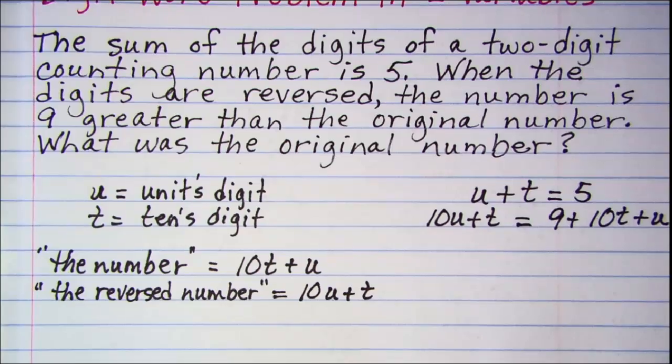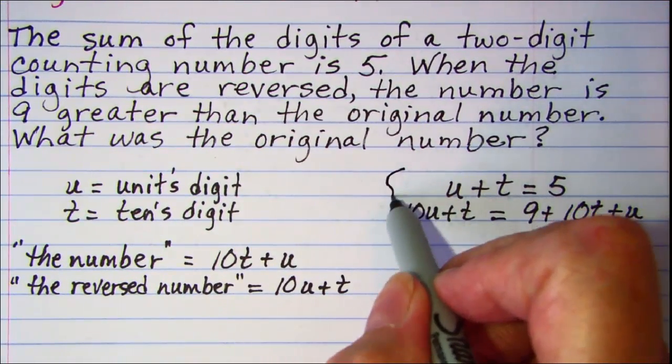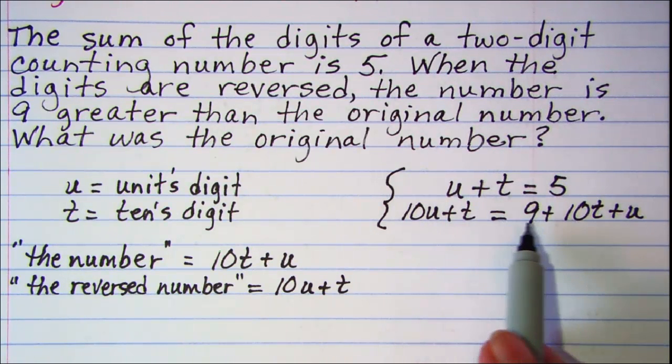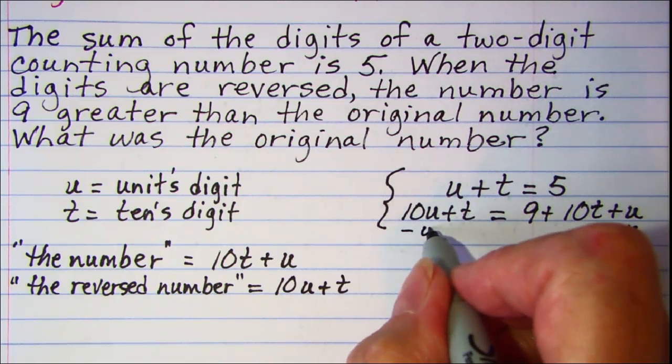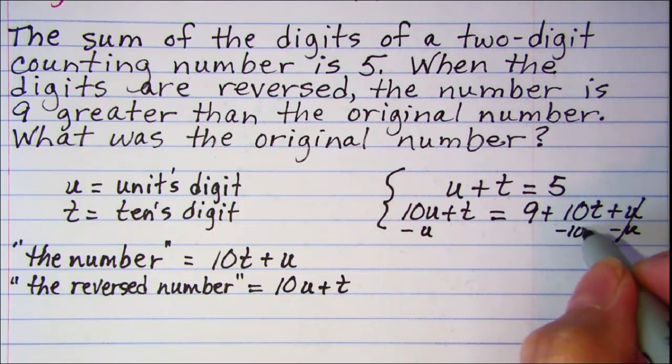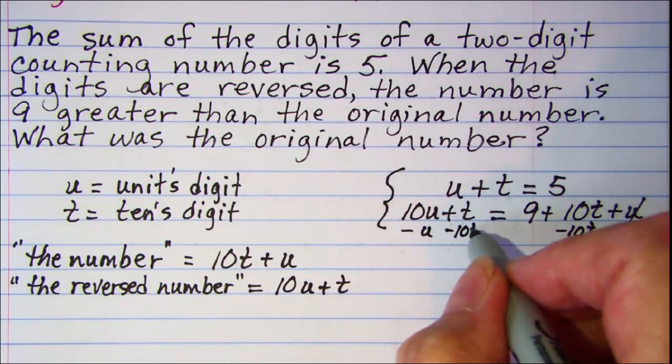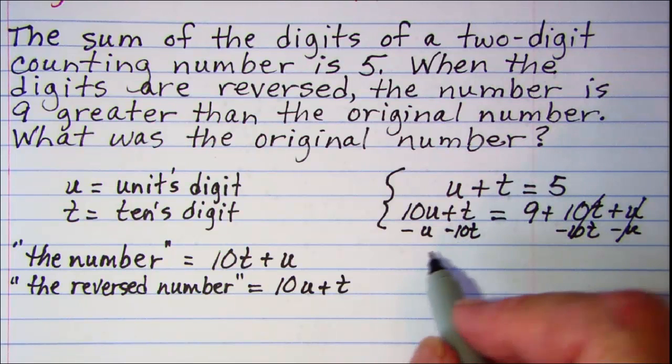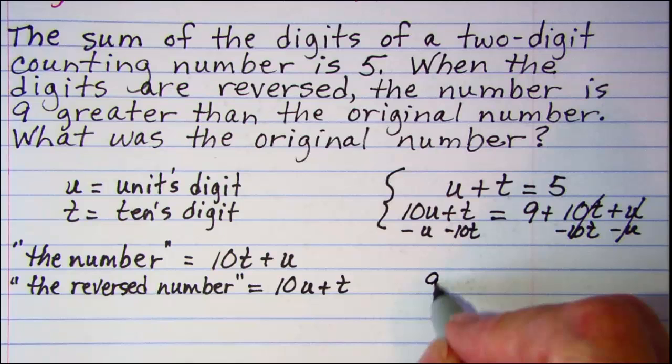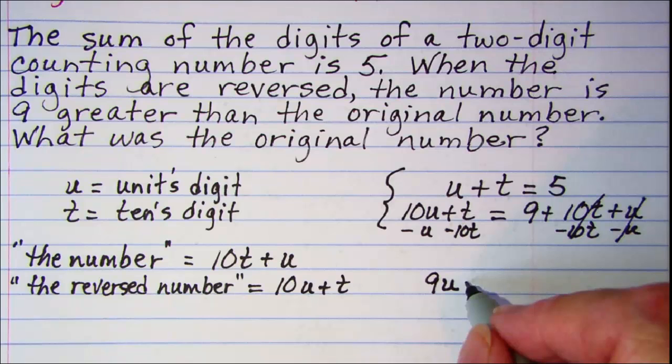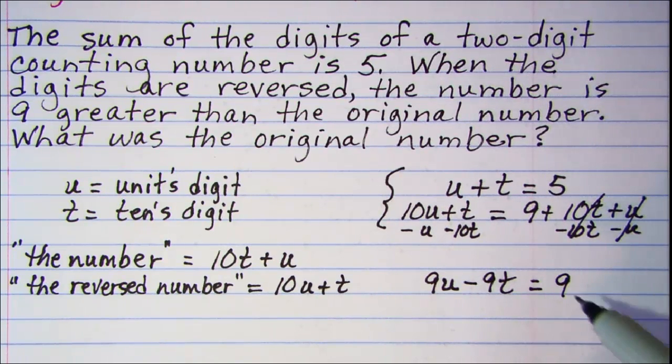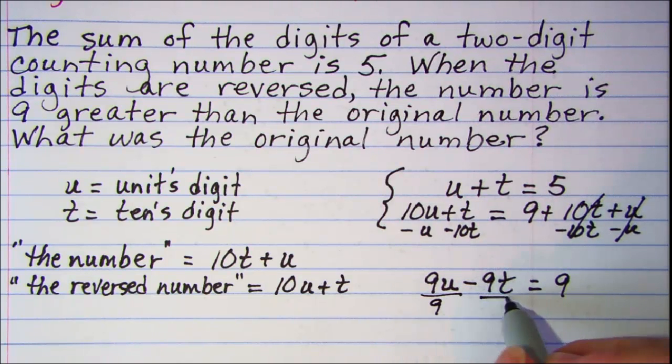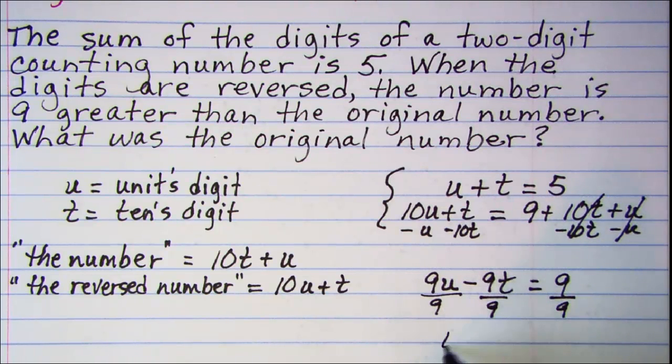Alright, we only have the two variables, so we only need two equations. So, this is my system that I'm going to need to solve. Let me simplify this second one and put my u and t over on the left side. Subtract u from both sides. These will cancel and subtract 10t from both sides. These will cancel and so now my equation is 10u minus u is 9u and then t minus 10t is negative 9t and my constant 9 is all I have left on the right side.